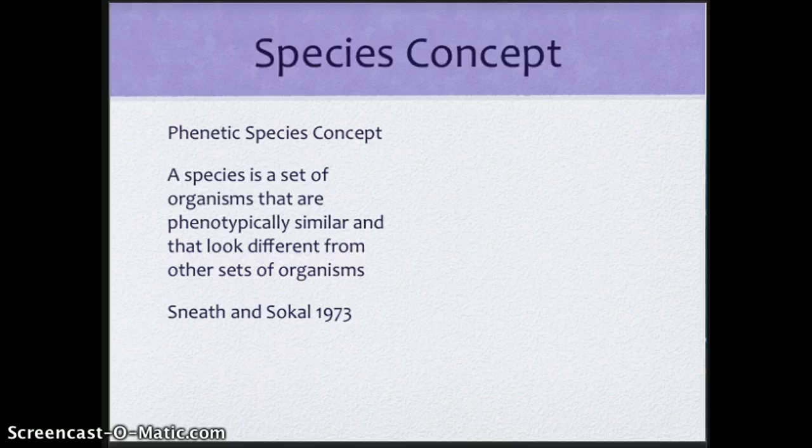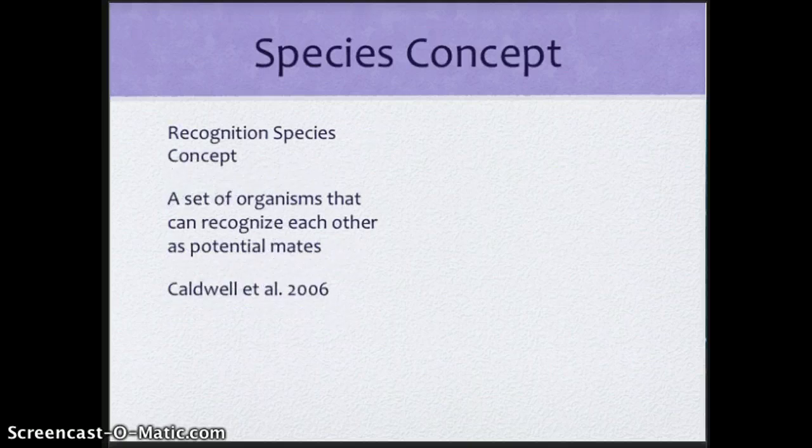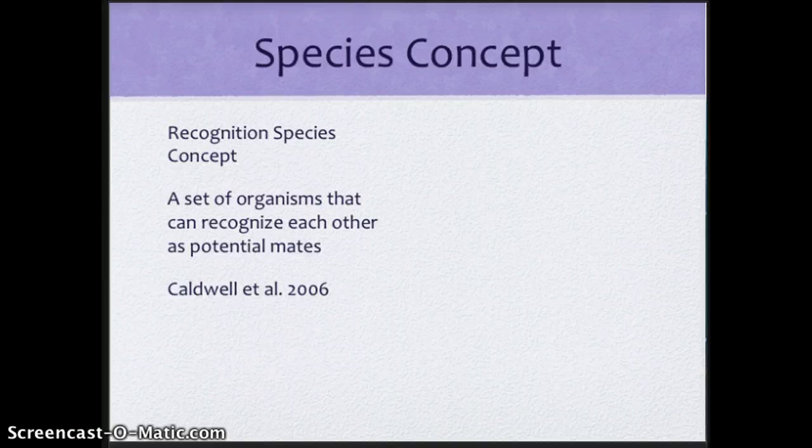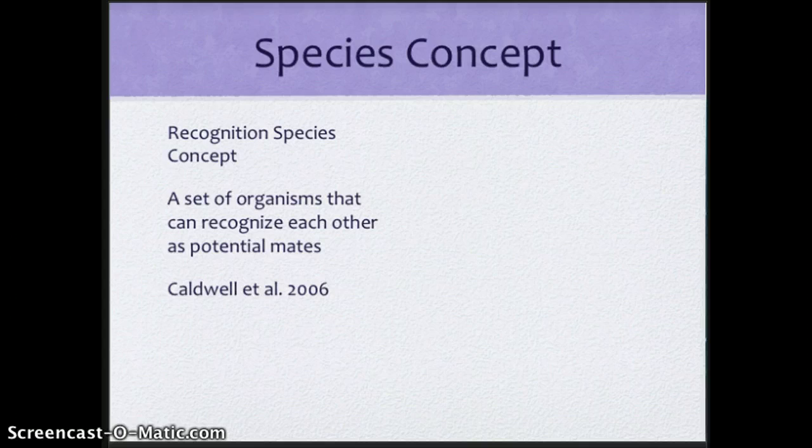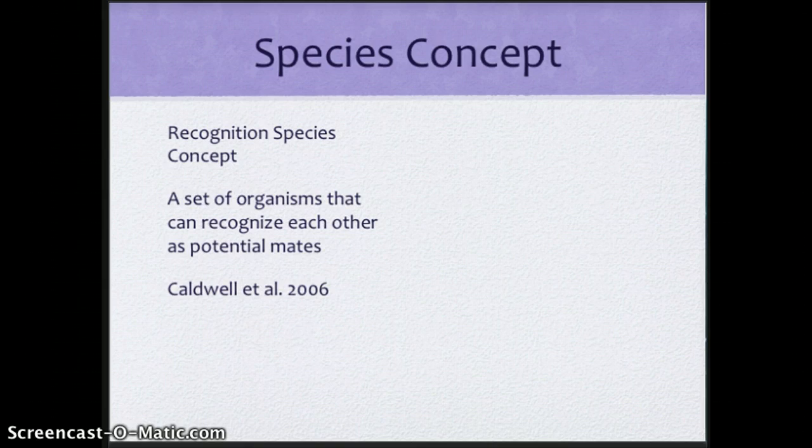Another set of principles for species came about a little bit later. The whole idea of a recognition species concept that species are actually sets of organisms that can recognize each other as potential mates. Now this widens the pool quite a bit because this now starts to allow for hybridization to take place.